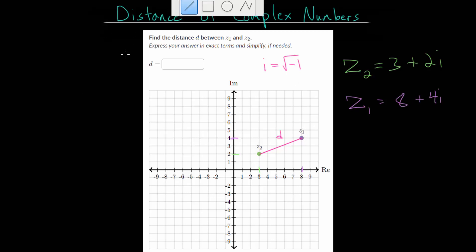Notice that we can drop a vertical line here and cut it off at the lower y value. We can also draw a horizontal line starting at the real value of 3 and ending at a real value of 8. When we do this, this creates a right triangle since these lines will be perpendicular to each other.